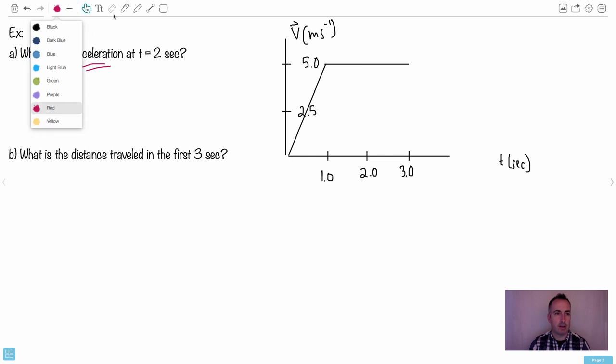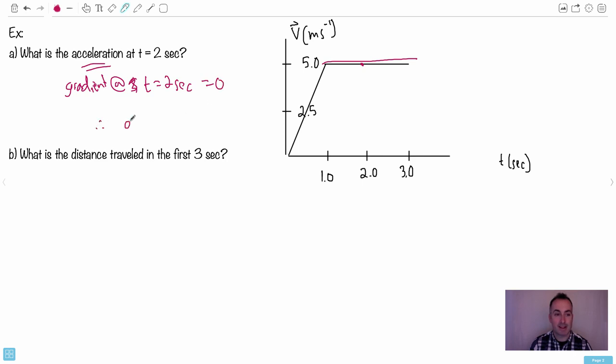And the gradient at t equals two seconds, the gradient is zero, so my acceleration is zero as well - zero meters per second squared or just zero. Isn't that awesome? You can actually deal with really weird looking things and you can totally do them.